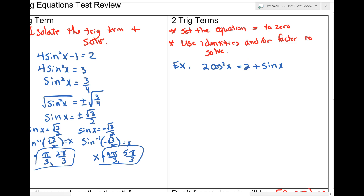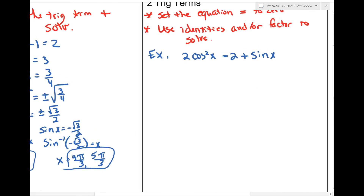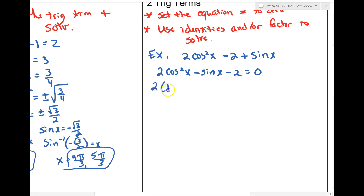First thing: set the equation equal to zero. You can move terms either way, but most people naturally go to where the squared term is, moving everything to the left. So I get cos²x − sinx − 2 = 0. Now, that almost looks factorable, but the problem is I have two different trig terms — cos²x and sinx — so I'm going to use the Pythagorean identity and change cos²x to 1 − sin²x.